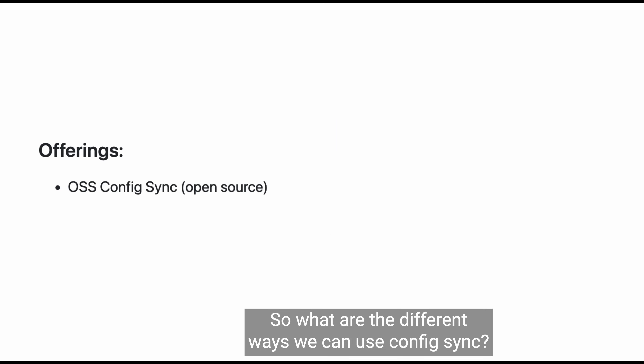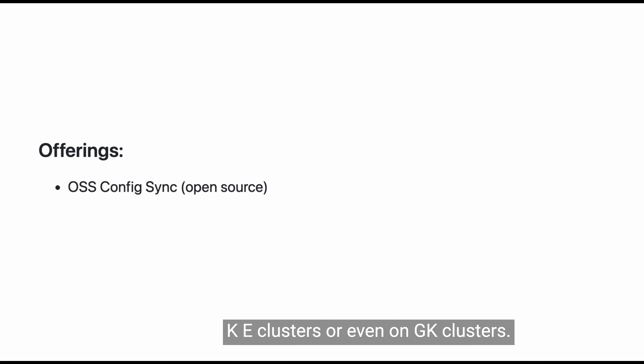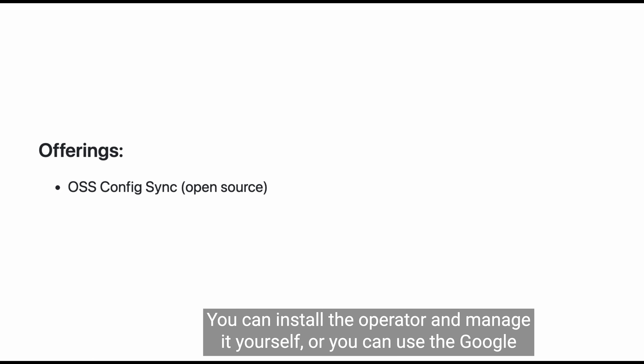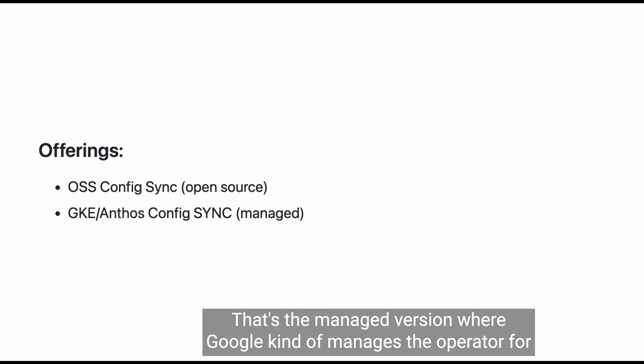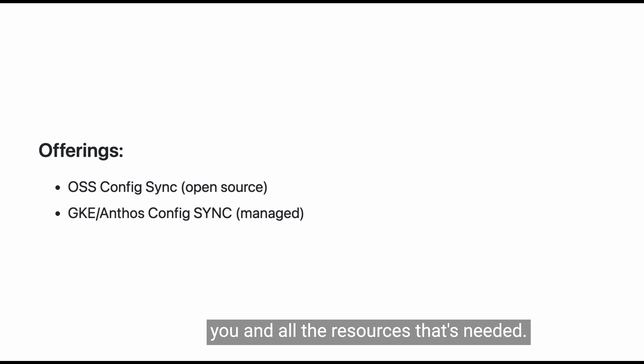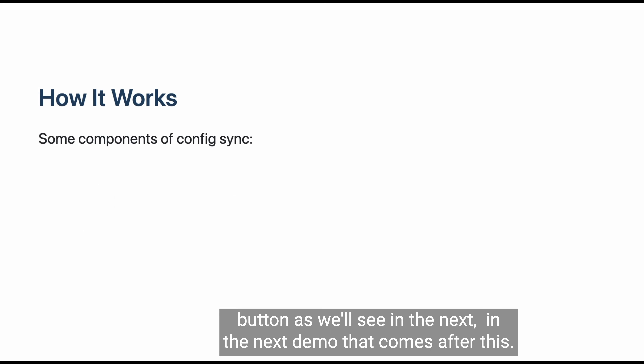There are different ways to use Config Sync. There's the open source Config Sync, which you can install on non-GKE clusters or even GKE clusters and manage yourself by installing the operator. Or you can use the Google-provided GKE or Anthos Config Sync — the managed version where Google manages the operator and all the resources needed, and you just set up the configuration by clicking a button in the UI or using Terraform.